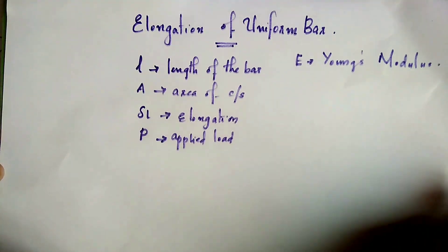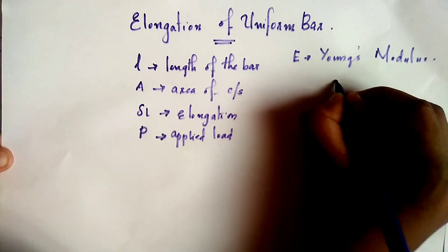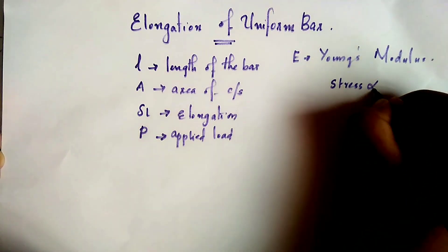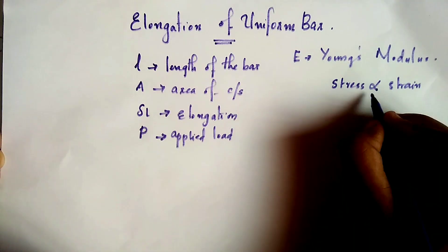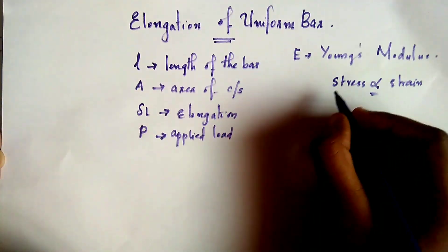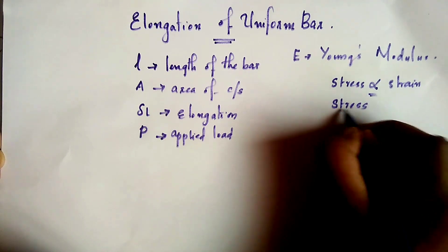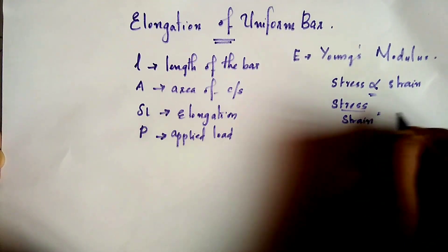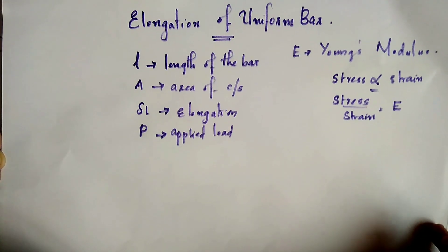Now, the next concept is Hooke's Law. What is Hooke's Law? Stress is directly proportional to strain. The proportionality constant is E — that is, stress divided by strain is equal to E, which is the modulus of elasticity.